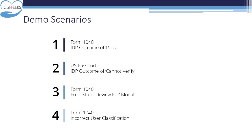CalHEARS has implemented Intelligent Document Processing, also referred to as IDP, a next-generation document processing and validation system designed to automate document verification and eligibility determination for healthcare programs. IDP is powered by the industry-leading Google Doc AI engine, which internally leverages best-in-class document classification and extraction technologies.